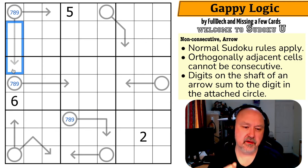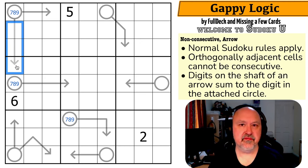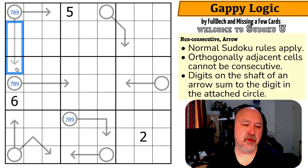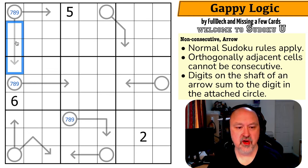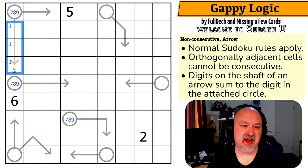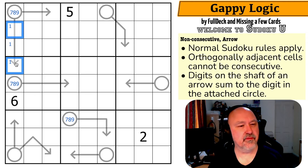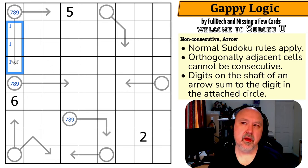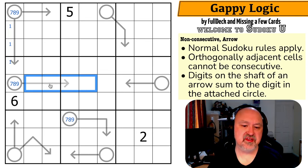There has to be a one on this arrow, because if there wasn't, the minimum digits I could put on it would be two, three, and four, which sums to nine. But wherever I put the three, the other two digits would be two and four, and three would be next to both — that's consecutive. So there must be a one on this arrow. Similarly, I need to put one on this other arrow because otherwise if it's two, three, four, I've got nowhere to put the three.